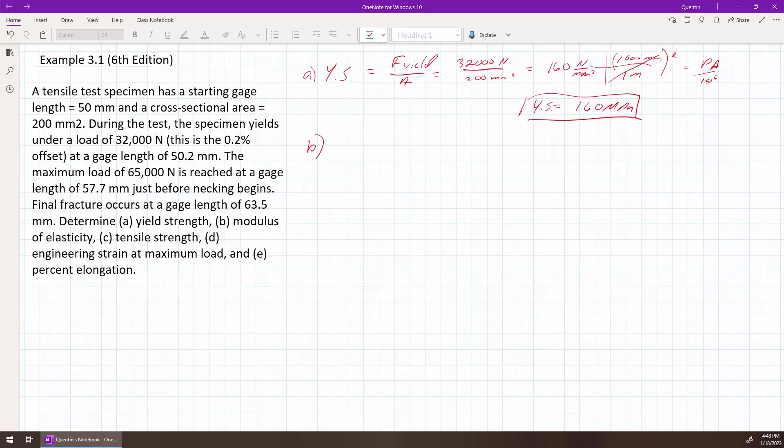So then we get to part B, the modulus of elasticity. Well, what is a modulus of elasticity? It's based on Hooke's law that's relating stress and strain in relationships. So we have S equals the modulus of elasticity times strain. So I want to solve this for the modulus of elasticity. So E is equal to S over strain.